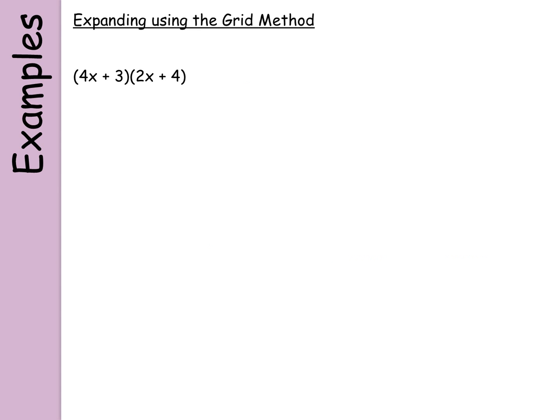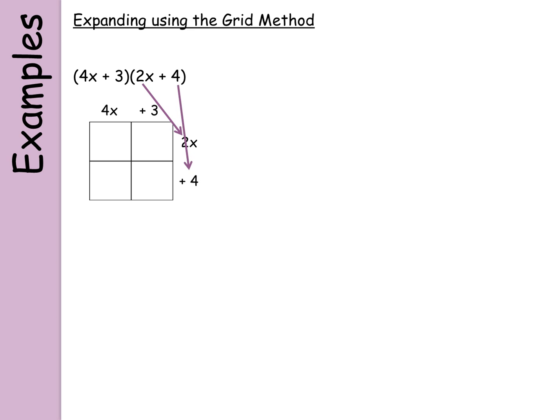It also gets a little bit trickier when you've got numbers in front of the x in the brackets — these are called coefficients. So you can see here I've got 4x and 2x, whereas before I just had x on its own. These numbers in front of x are called coefficients. The method is still exactly the same — you just have to take a little bit of care when multiplying. Split the 4x and the 3, and the 2x and the 4, as before.